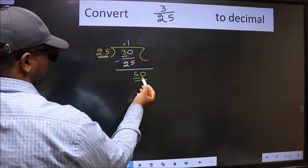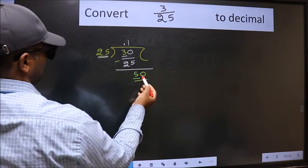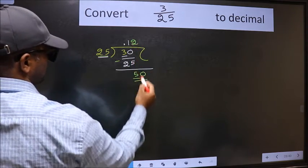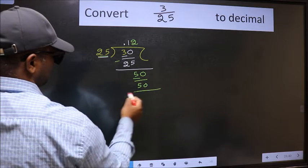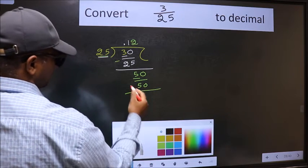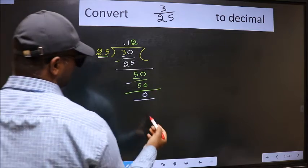So, 50. When do we get 50 in 25 table? 25 to 50. Now, we should subtract. We got 0.